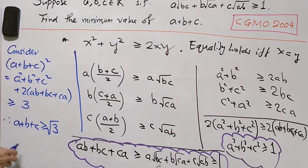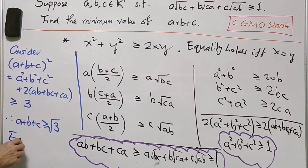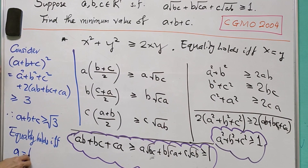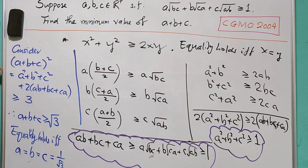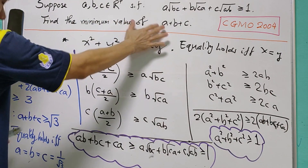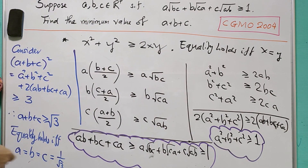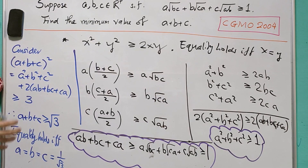Equality holds if and only if A equals B equals C equals 1 over √3. Therefore, we conclude that the minimum value of A plus B plus C is equal to √3. That's the end of today's lesson — see you again, bye-bye.